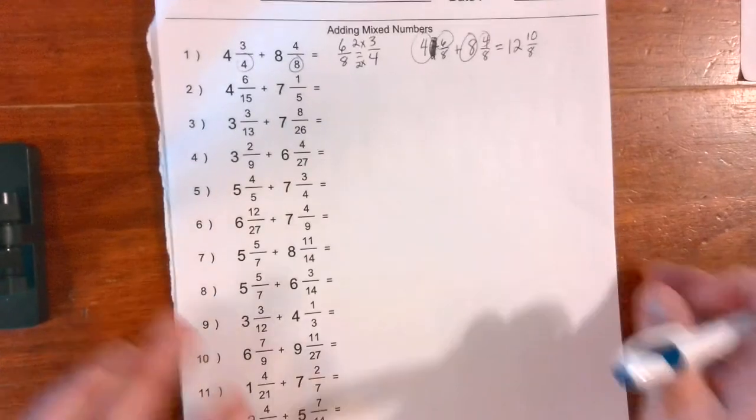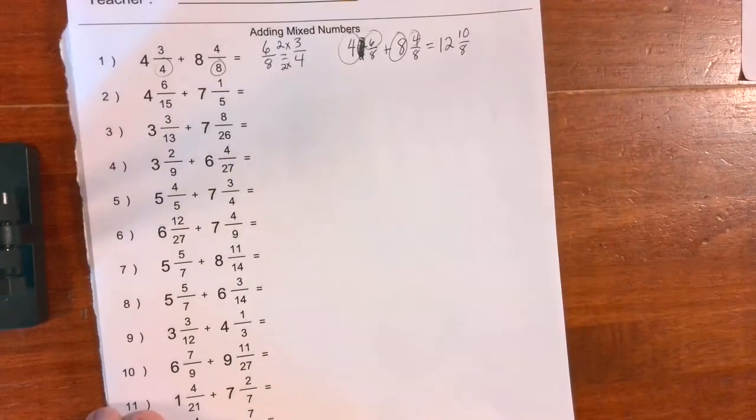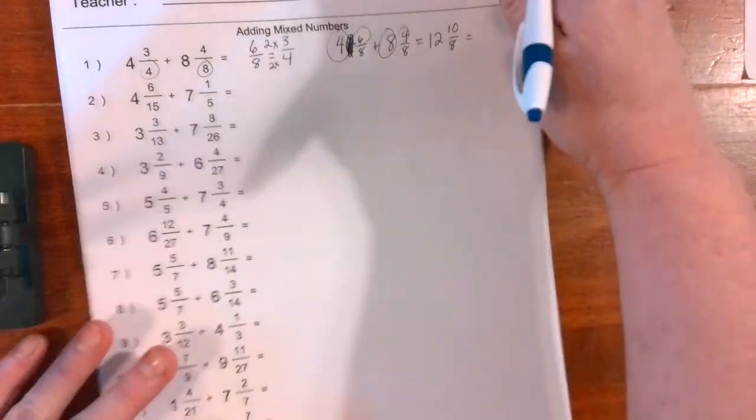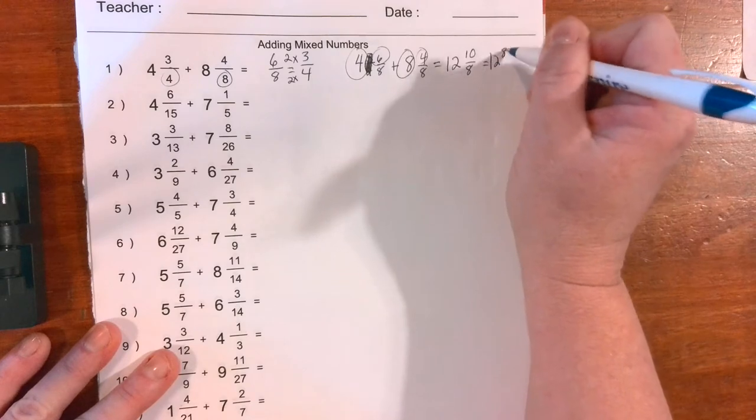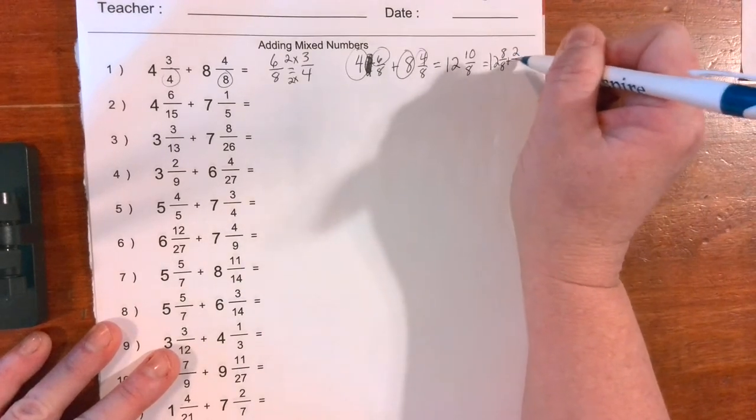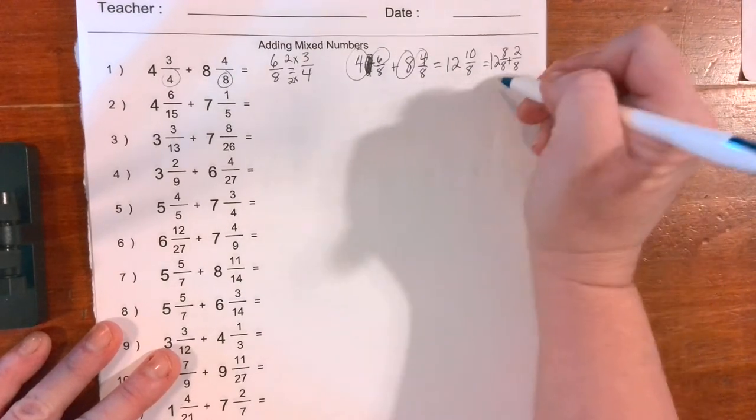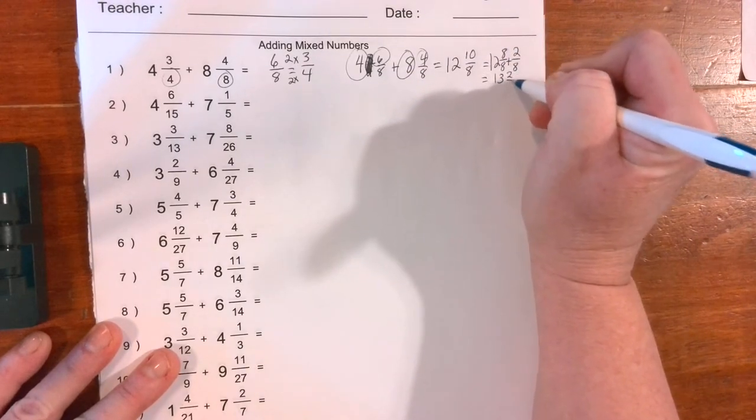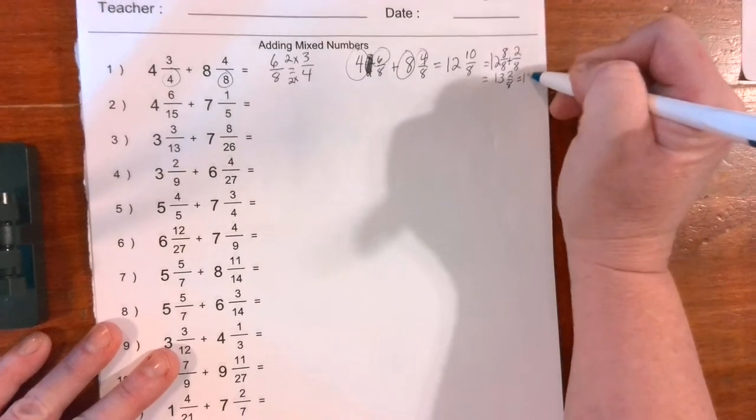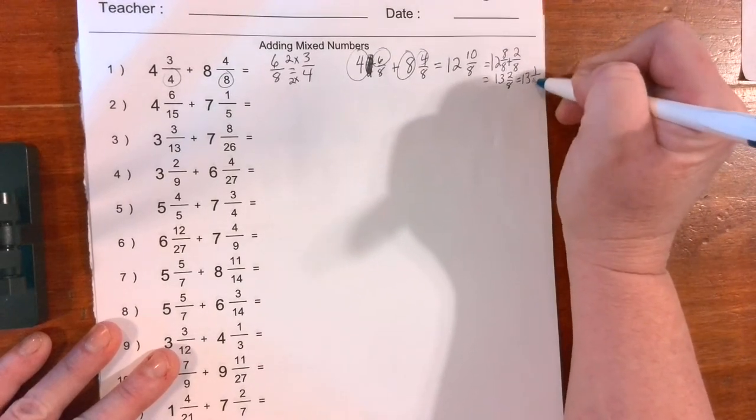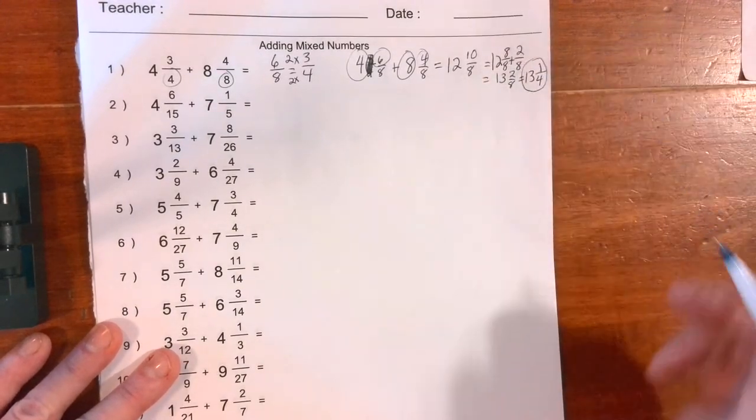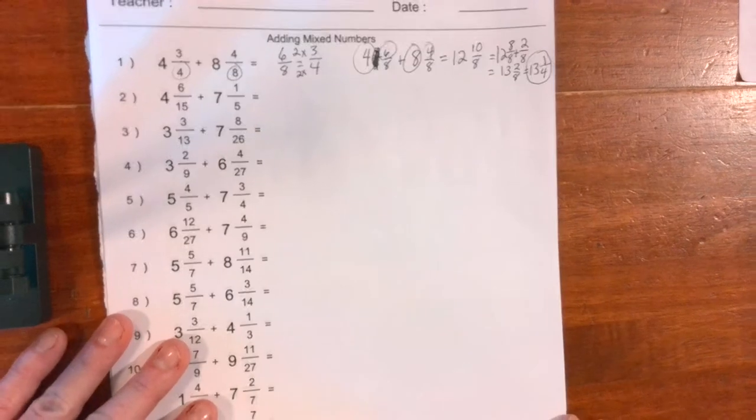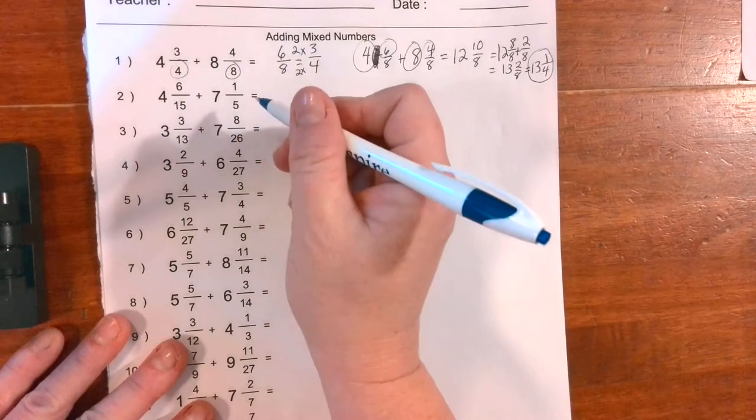So as we did on that last question, problem number four, we have to pull out a whole. So if I pull out a whole, I have 12 and 8/8 plus 2/8, and that's going to turn into 12 plus 1 is 13 and 2/8, which we just did this problem on the other page, reducing 2/8 to 1/4. So your answer is 13 and 1/4. Alright, we're going to do our next one.